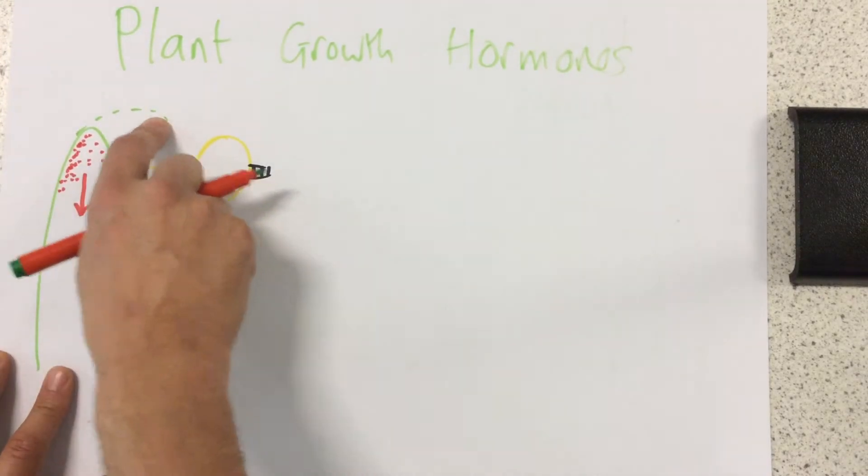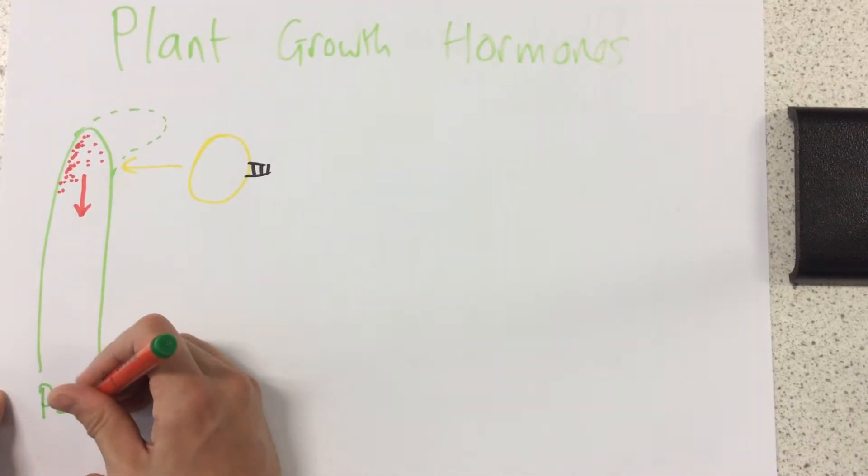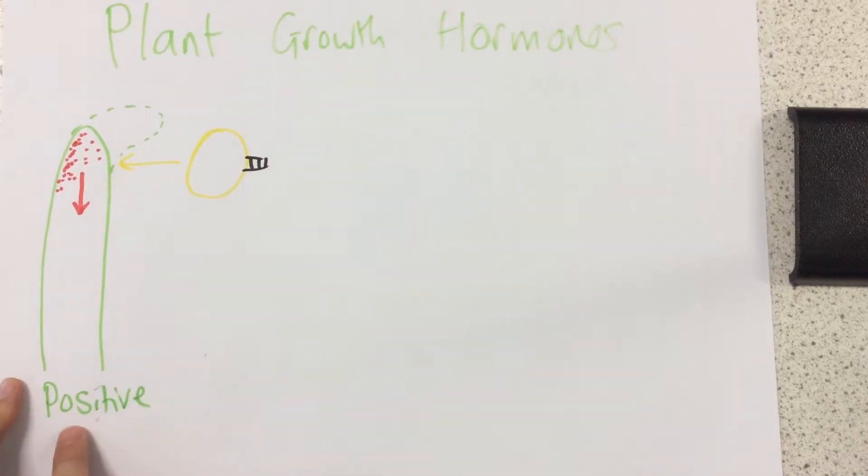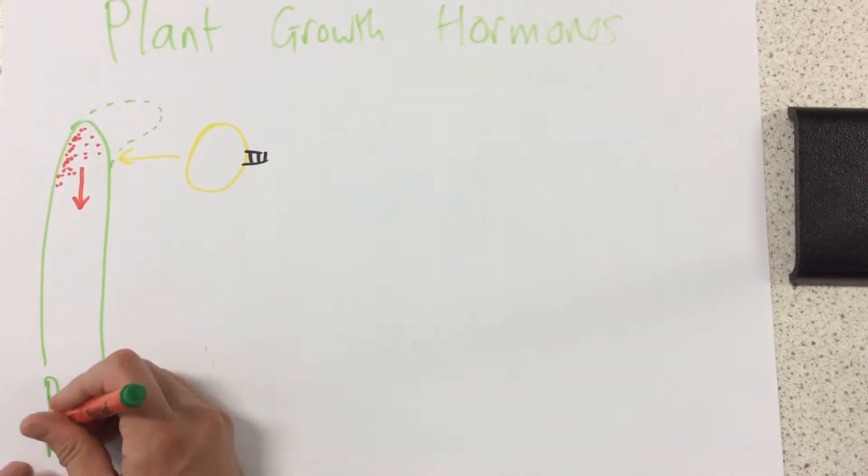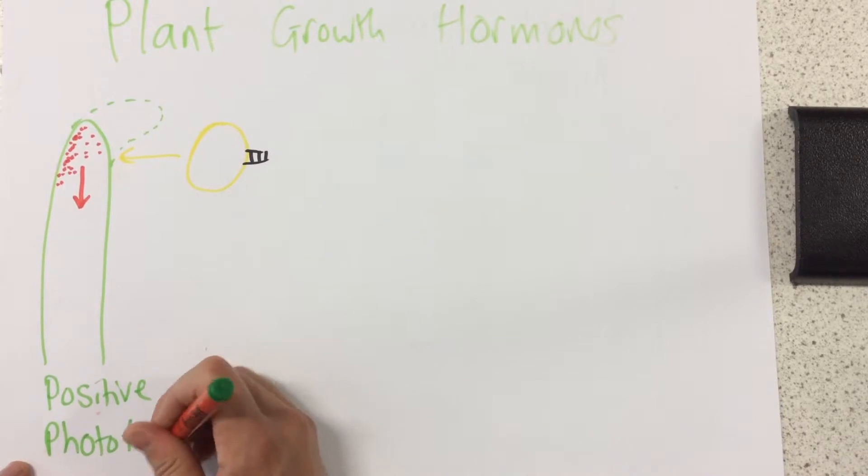Now this phenomenon of growing towards the light is called positive, because it's towards the light, and then phototropism.